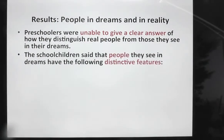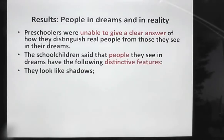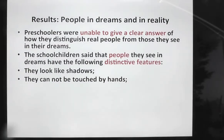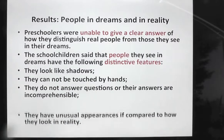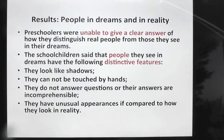School children said that people they see in dreams have the following distinctive features: they look like shadows; they cannot be touched by hands; they do not answer questions or their answers are incomprehensible; and they have unusual appearances compared to how they look in reality.